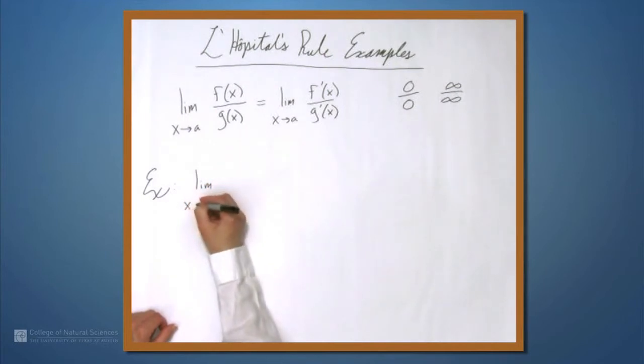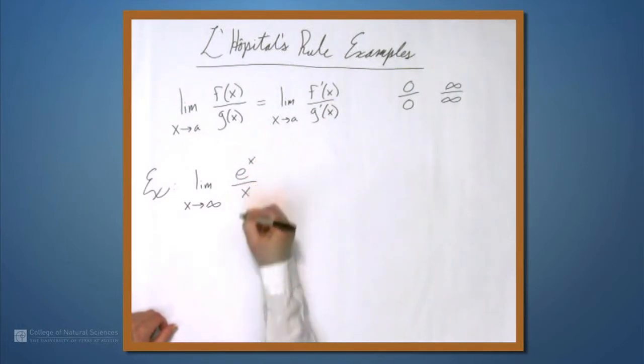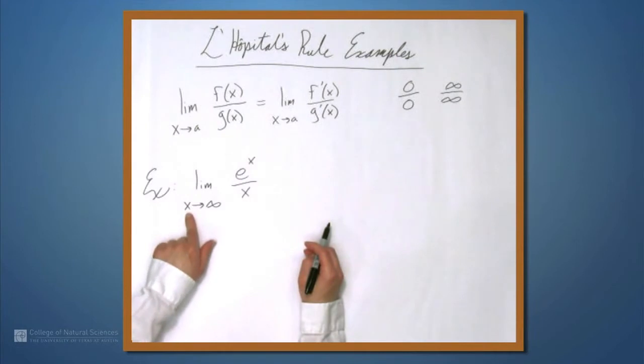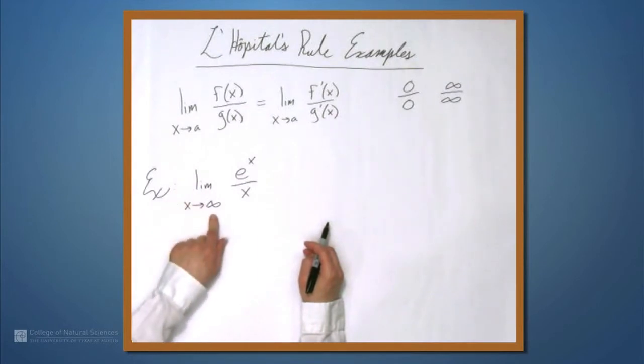Let's find the limit as x approaches infinity of e to the x over x. So one thing actually that you might have noticed already, I wrote x approaches infinity here, but I have x approaches a up here. So in the formulation of L'Hopital's rule, a can be not only a real number, but also plus or minus infinity.